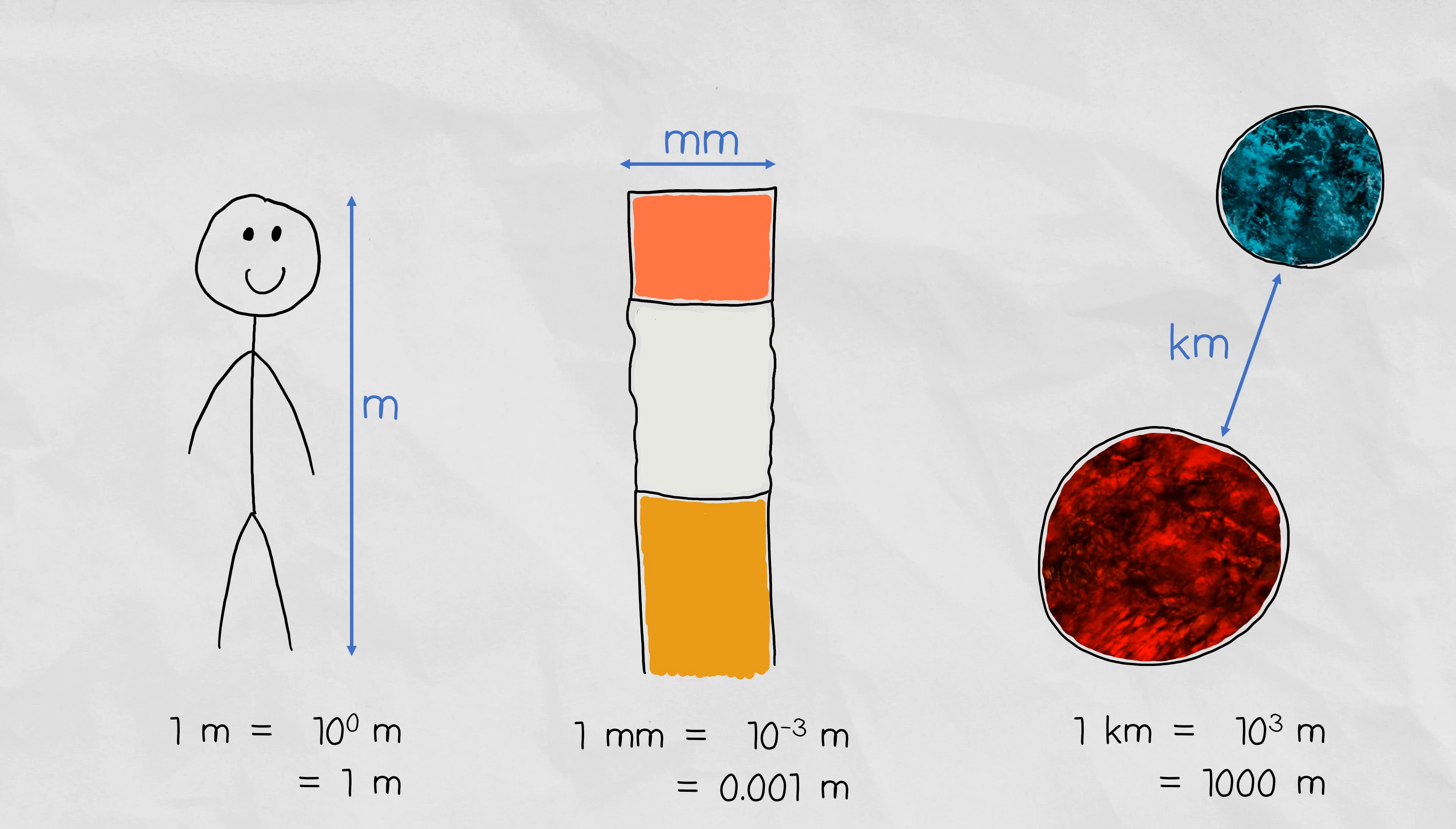These prefixes that precede the unit indicate the scale. So one kilometer is ten to the three, or a thousand meters, and one millimeter is ten to the negative three, or 0.001 meter. These prefixes essentially help grab the scale of the measurement without having to write very large or small numbers.